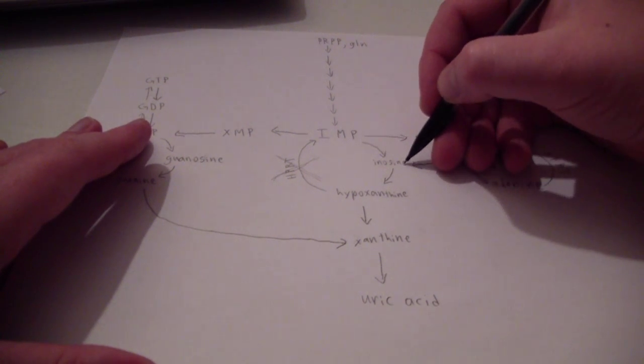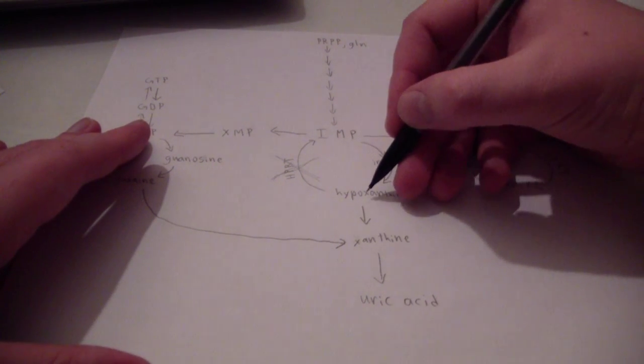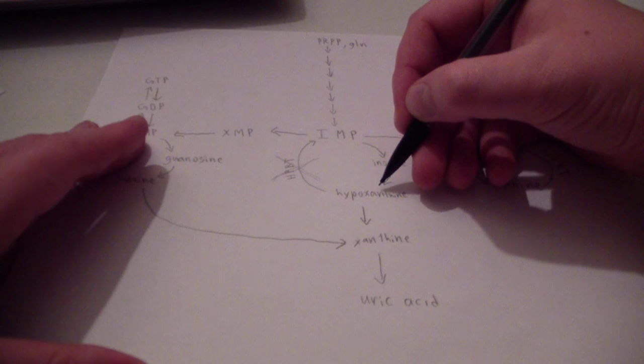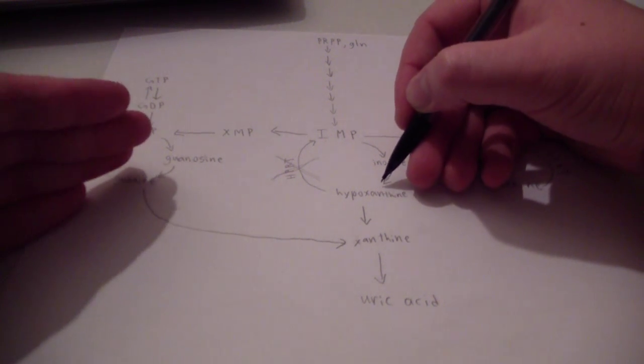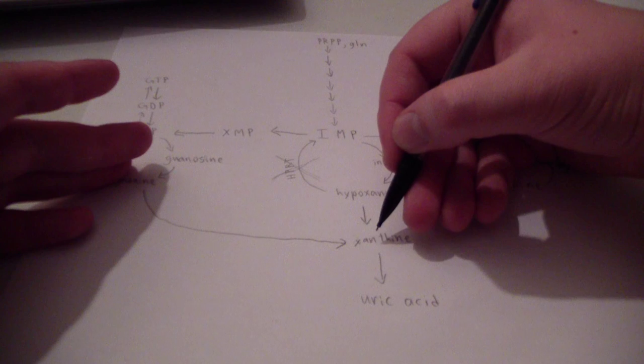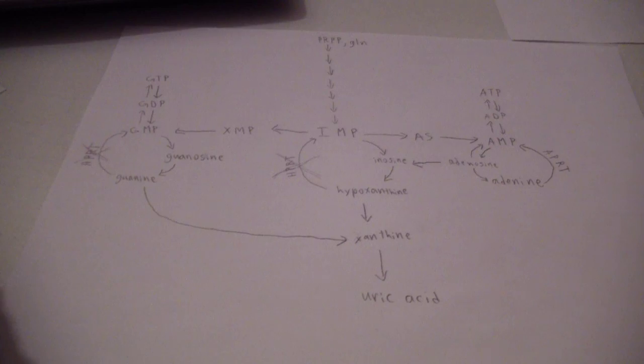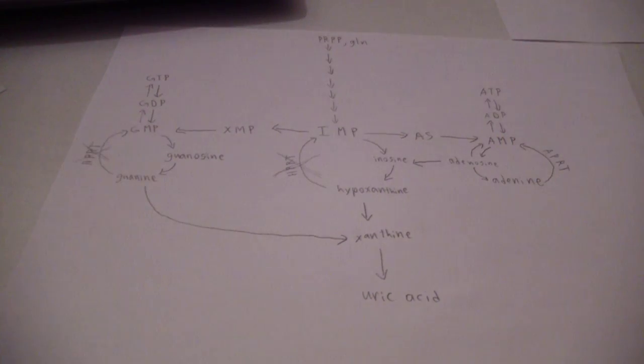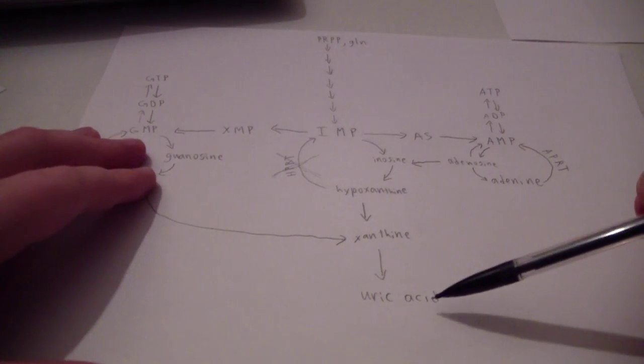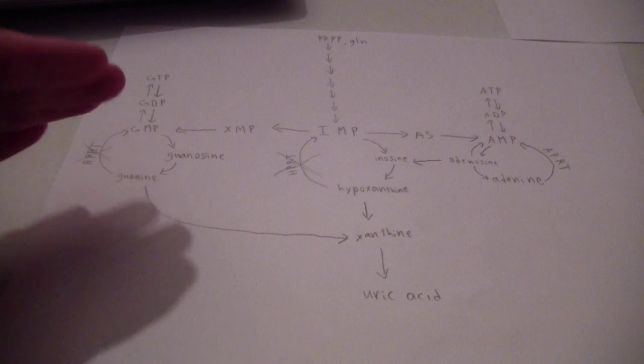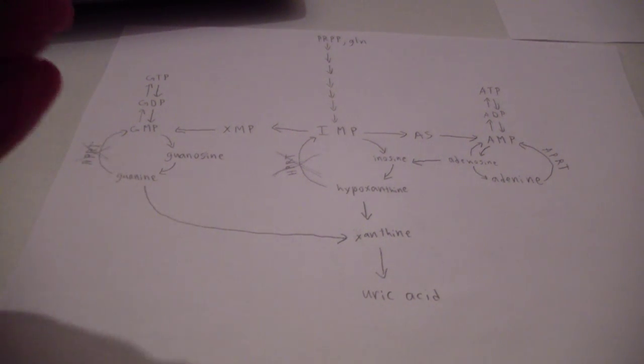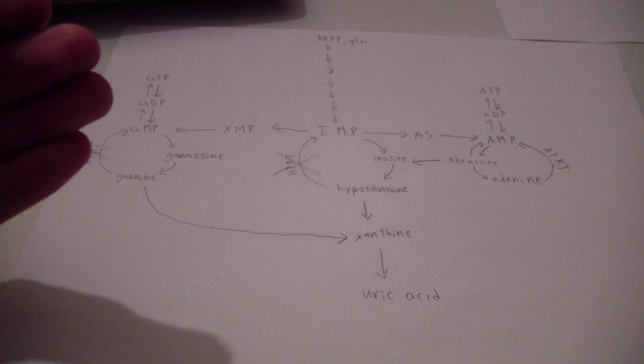Same thing here. IMP might go to inosine. And we might want to recycle the inosine to hypoxanthine. And say there's too much of a buildup here. We'll go to xanthine and uric acid. Now, the problem, one of the big problems with Lesch-Nyhan syndrome is there is a buildup of uric acid. This causes gout and things like this. It causes also extra uric acid in the urine.